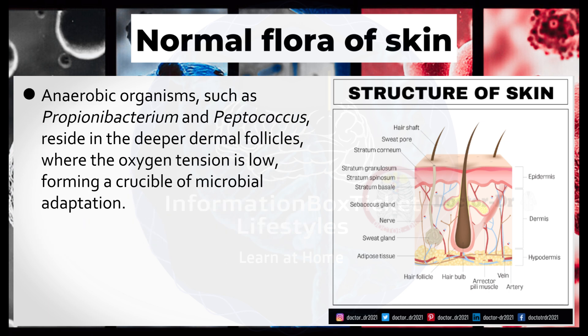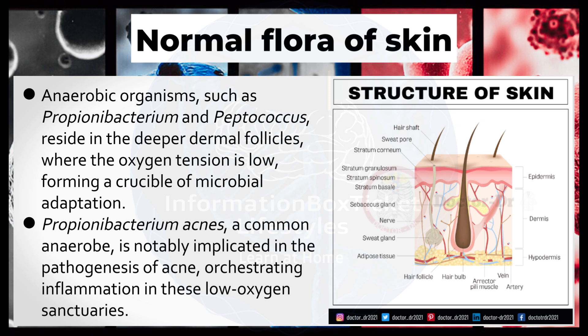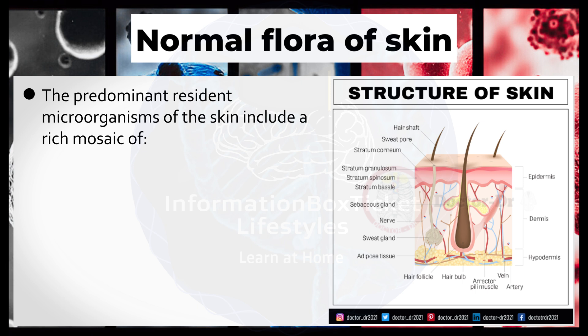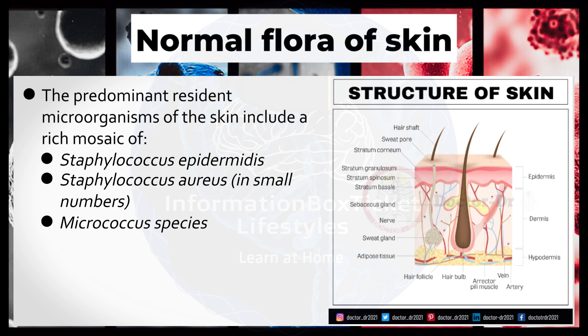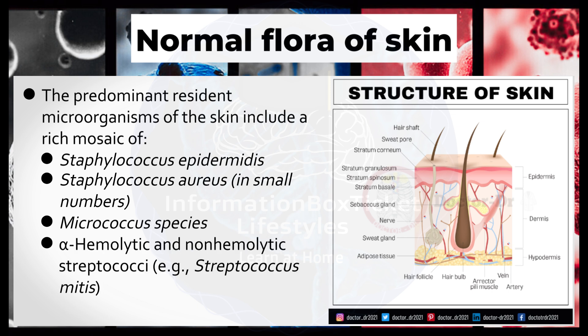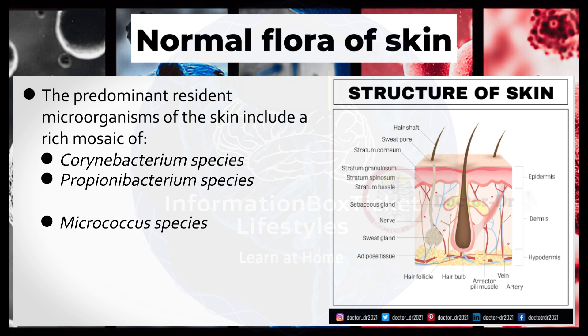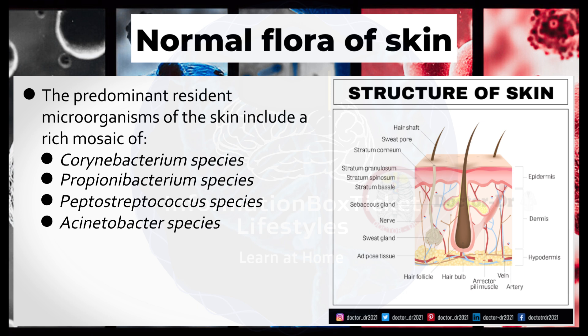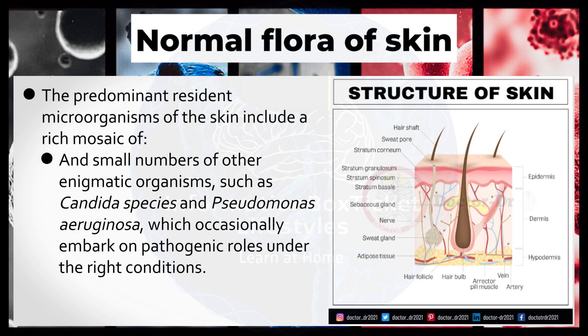Anaerobic organisms such as Propionibacterium and Peptococcus reside in the deeper dermal follicles, where the oxygen tension is low. Propionibacterium acnes, a common anaerobe, is notably implicated in the pathogenesis of acne. The predominant resident microorganisms of the skin include Staphylococcus epidermidis, Staphylococcus aureus in small numbers, Micrococcus species, alpha-hemolytic and non-hemolytic streptococci (e.g., Streptococcus mitis), Corynebacterium species, Propionibacterium species, Peptostreptococcus species, Acinetobacter species, and small numbers of other organisms such as Candida species and Pseudomonas aeruginosa, which occasionally play pathogenic roles under the right conditions.